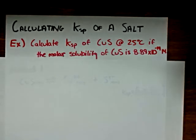The example that we're given asks us to calculate the Ksp value of copper sulfide at 25 degrees Celsius if the molar solubility of copper sulfide at this temperature is 8.89 times 10 to the negative 19 moles per liter.